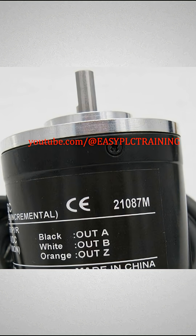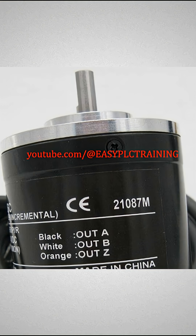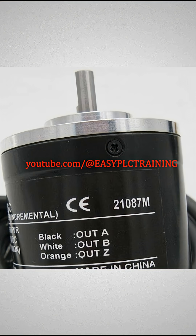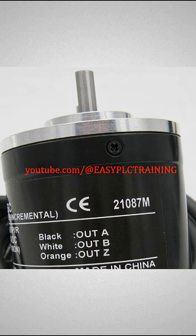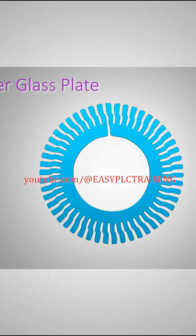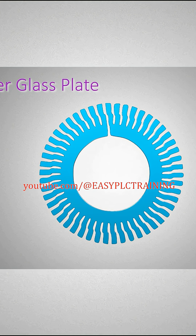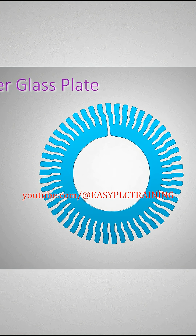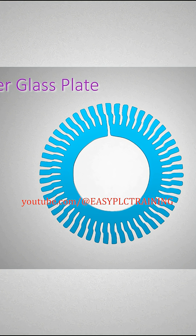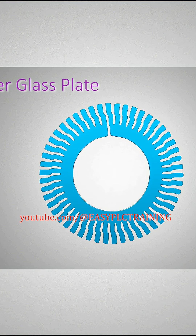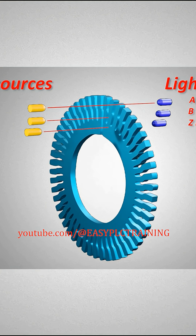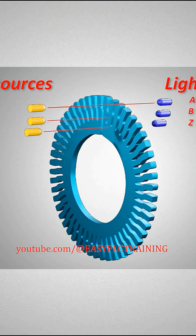The encoder has three output pulse channels called A, B, and Z phase, which we will discuss later in this tutorial. The original encoder glass plate has groove tracks on it — these groove tracks are for the A, B, and Z phase encoder output channels. This means there will be three separate light beam sources and three light beam detectors inside the encoder for the A, B, and Z output phases.